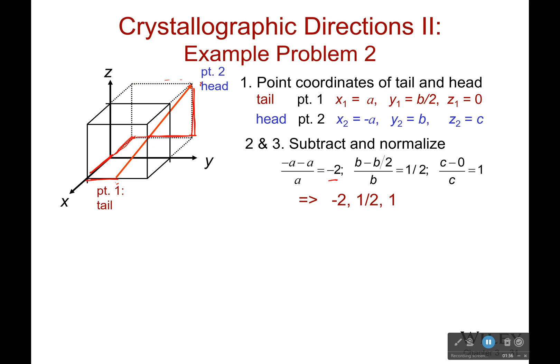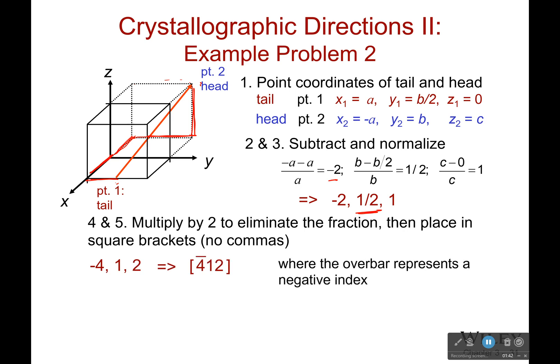We can't, however, have a fraction. We have to multiply everything by 2. So multiply everything by 2 and put it in square brackets without commas. So I get negative 4, 1, 2.